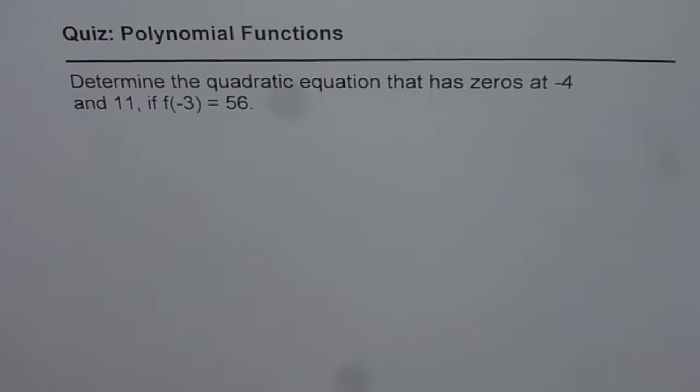Quiz on polynomial functions. Determine the quadratic equation that has zeros at -4 and 11 if f(-3) equals 56.